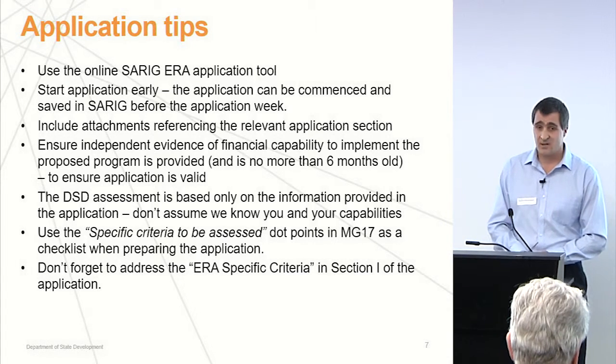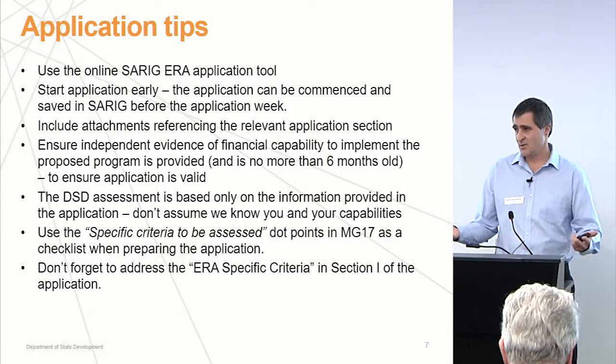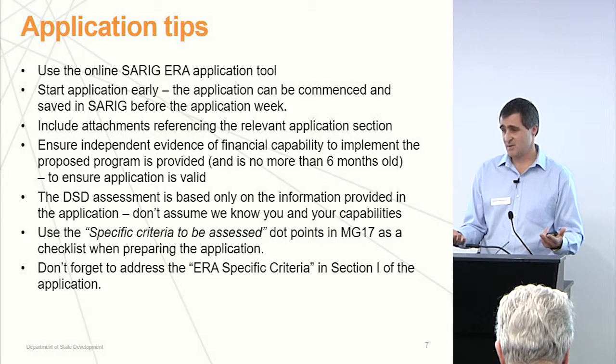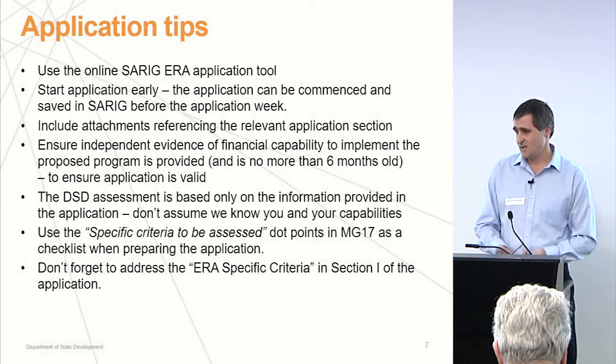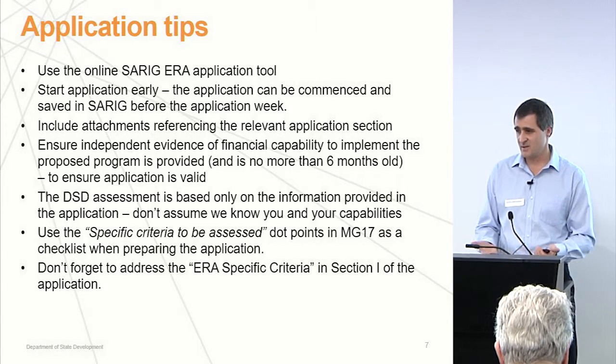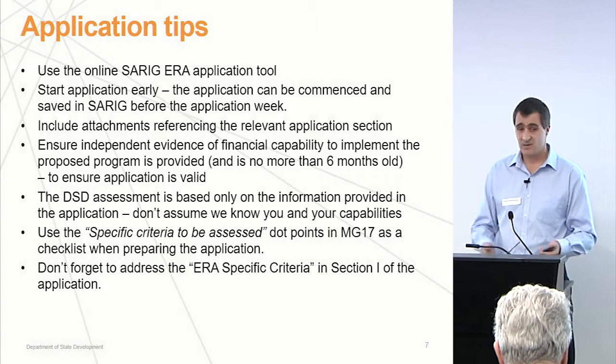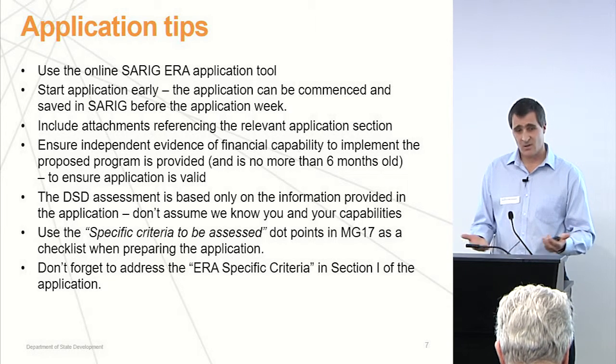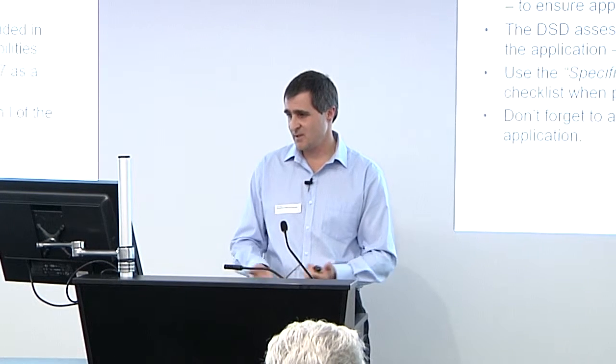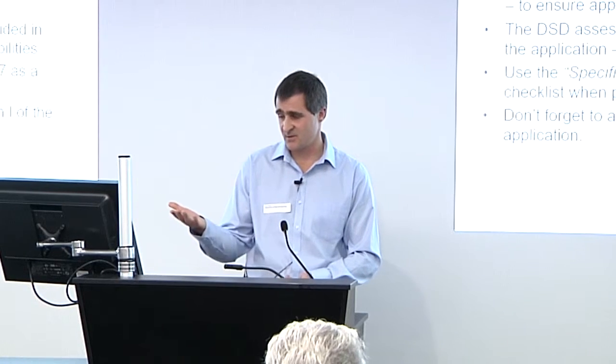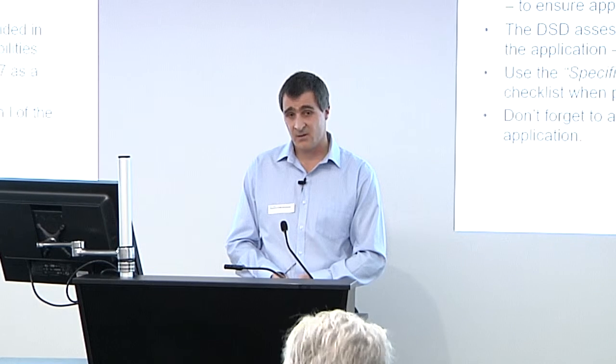A few application tips: I encourage you to use the online SARIG application. If you're a company that's already in the system, it'll pre-populate with data detailing your tenements and details, and it automates quite a few things. You can start the application early before the application week, so make a start and ring us with any questions during that preparation period. If you've got a reasonable amount of information to include, put it in an attachment as a Word document — you can attach that through SARIG. Ensure you've got independent evidence of financial capability, as without it the application is not valid and won't go into any competing process.